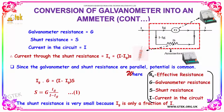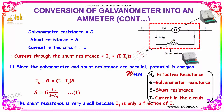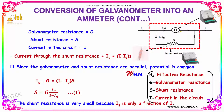So, the galvanometer resistance is considered as G and the shunt resistance is considered as S. The current in the circuit is I. The current through the shunt resistance I_S is equal to I minus I_G. Since the galvanometer and shunt resistance are in parallel, the potential is common — the voltage is common. So, I_G into G is equal to I minus I_G into S.